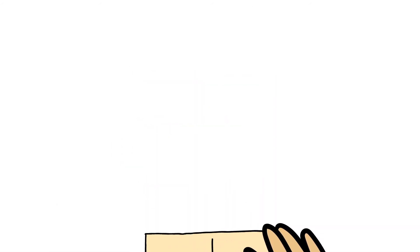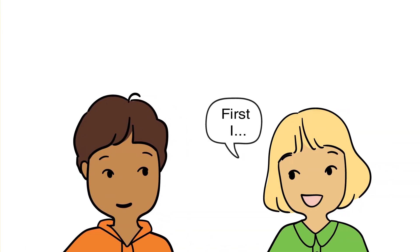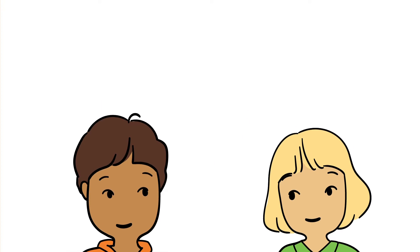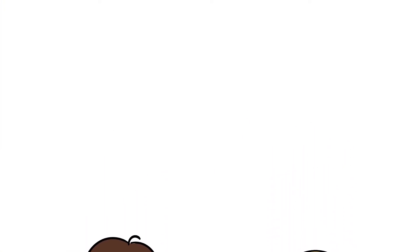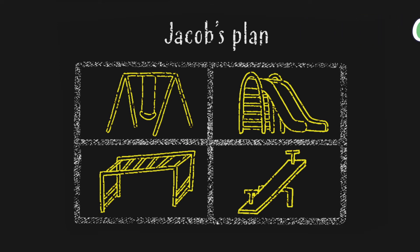They use math tools, draw pictures, write equations, and share their thinking. First, I looked at Jacob's work. I think he made fourths because each section is equal.